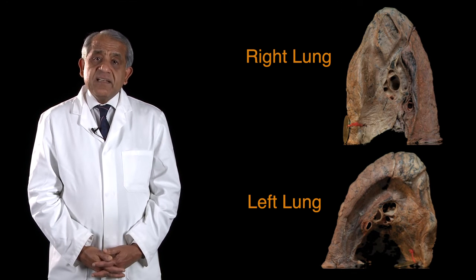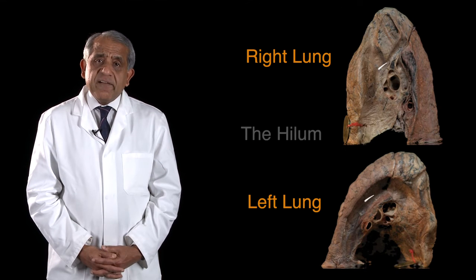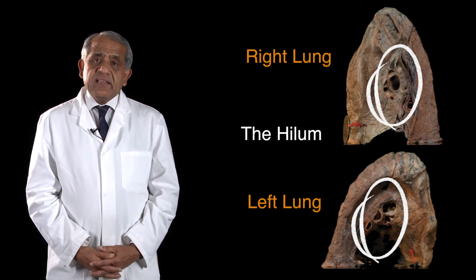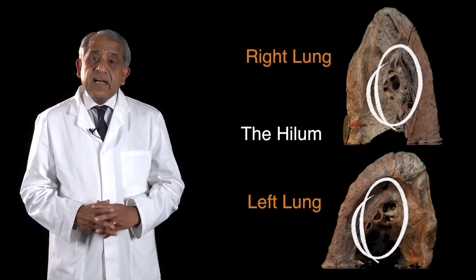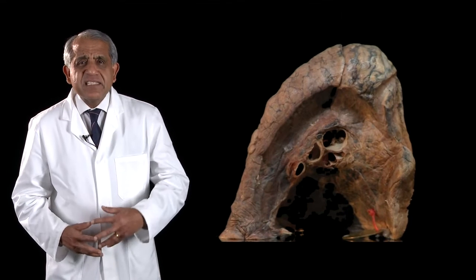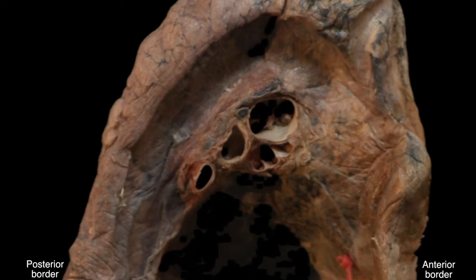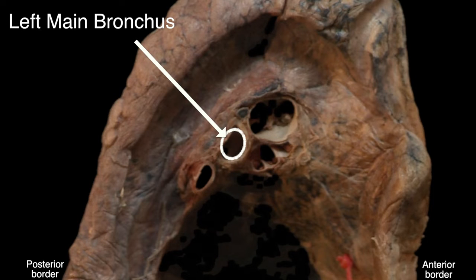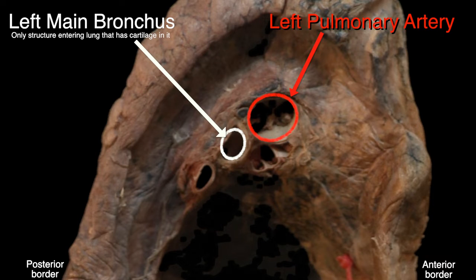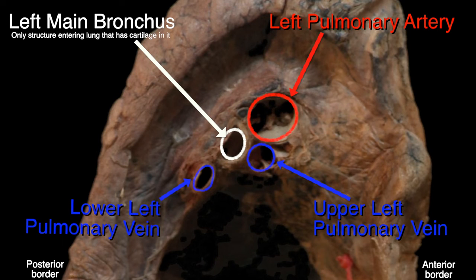The medial surface of the lung is characterized by the presence of a large area called the hilum — a large and busy area. I usually start with the left lung because it is a simpler hilum to explain. Four large tubes are seen in the hilum of the left lung. The most posterior structure is the left main bronchus — the only tube entering the lung that has cartilage in it. Above the left main bronchus and somewhat in front is the left pulmonary artery. In front of the left main bronchus is the left upper pulmonary vein, and directly below is the left lower pulmonary vein.